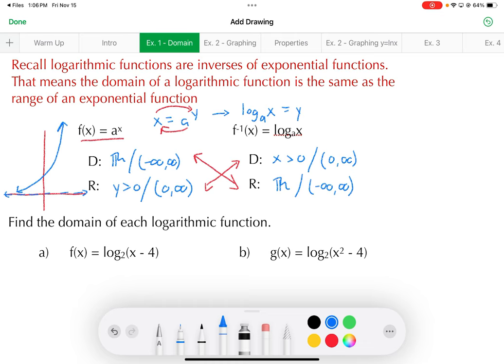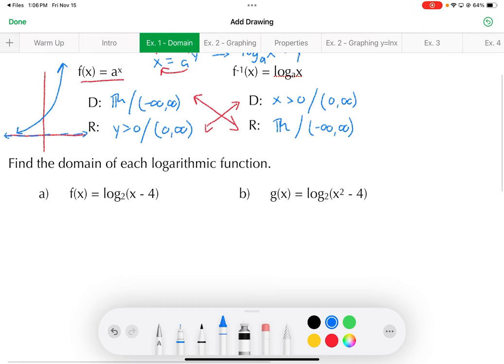So we can apply that down here. If we want the domain of f of x, we focus on what I call the argument of the logarithm. That x minus 4 has to be non-negative, so greater than 0. That means x has to be greater than 4.